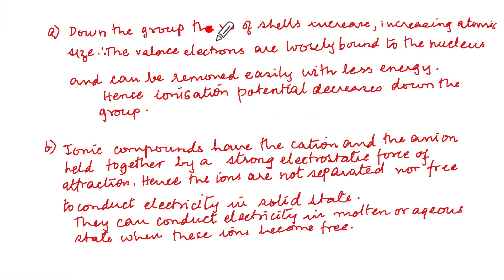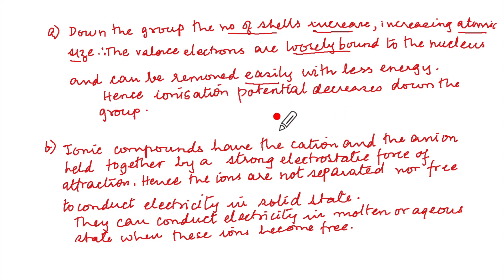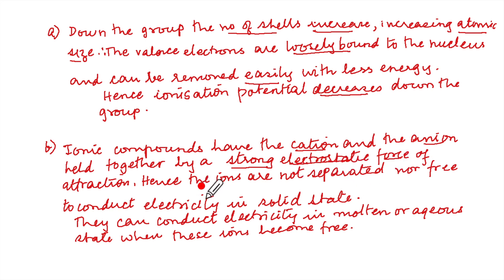Down the group, the number of shells increases, which increases atomic size. The valence electrons are therefore loosely bound to the nucleus and can be removed easily, requiring less energy — hence ionization potential decreases down the group. For ionic compounds: the cations and anions are held together by strong electrostatic forces of attraction. The ions are not free and cannot be separated, so they cannot conduct electricity in the solid state. They conduct in molten or aqueous state when ions become free.